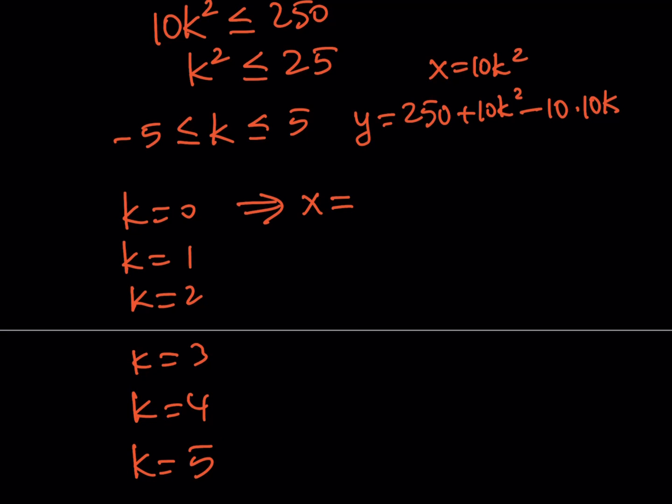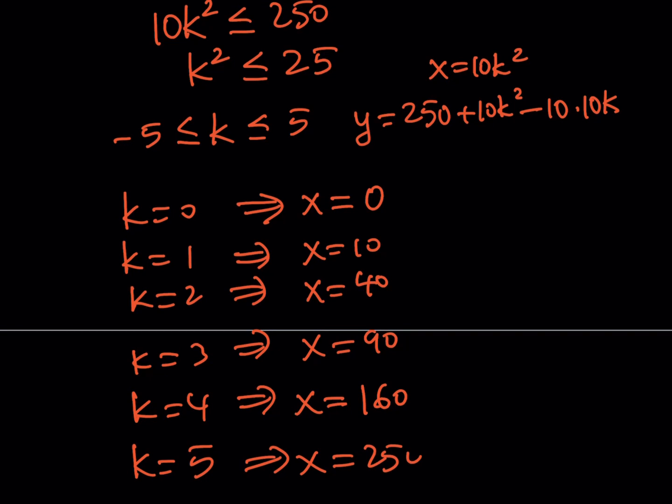This also gives you kind of parametric solutions in terms of another variable. So if k is equal to zero obviously you're going to get x equals zero. If k is equal to one you're going to get x equals 10. If k is equal to two you're going to get x equals 40. If k is equal to three then you're going to get x equals 90, and then from here you're going to get x equals 160 and finally you're going to get x equals 250.